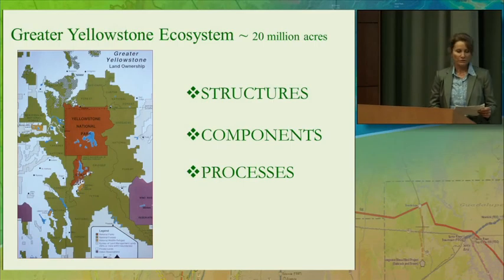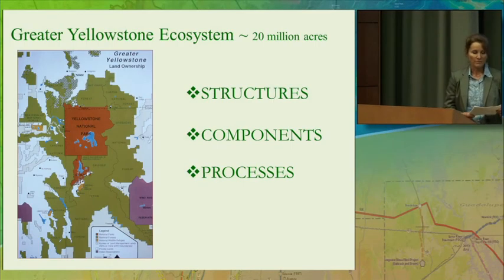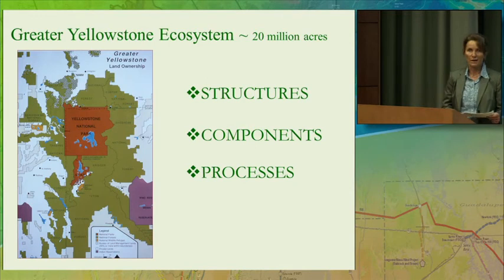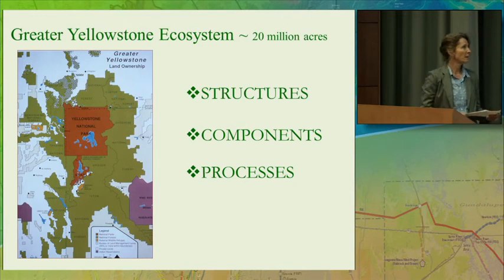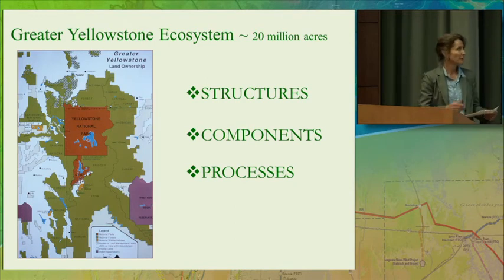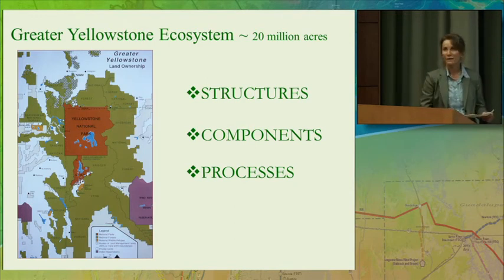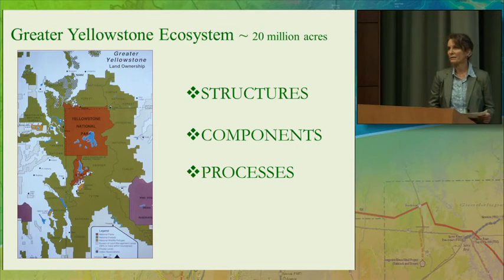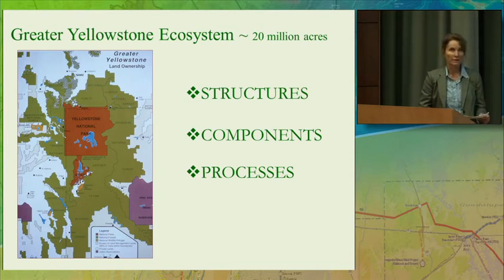The Greater Yellowstone Ecosystem, about 20 million acres in extent, is a mosaic of public and private lands. In the center you can see the park itself. It's about 60 by 60 miles in extent — a postage stamp really on the face of the earth.